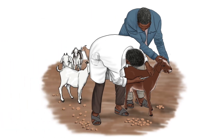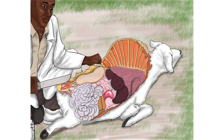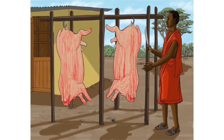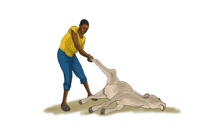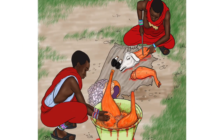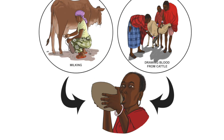Animal health workers treating sick animals and performing post-mortem inspections. Abattoir workers and people involved in slaughtering sick animals. People who may come into contact with excretions from sick or dead animals affected by the disease, or those who may handle uncooked meat or drink blood and raw milk of animals affected by the disease.